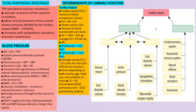Blood pressure equals CO times TPR; normal is 120 over 80 (systolic over diastolic). MAP also equals diastolic blood pressure plus pulse pressure divided by 3. Cardiac output is the amount of blood pumped per minute, around 5 to 5.6 liters per minute.